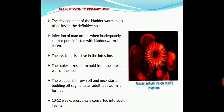The further development of the bladder worm or cysticercus takes place only inside the definitive host, that is man. Infection of man occurs when inadequately cooked pork infected with bladder worms is eaten. The cysticerci become active in the intestine, the scolex takes firm hold of the intestinal wall, the bladder is thrown off, and the neck starts budding segments. An adult tapeworm is formed, and in 10 to 12 weeks the proscolex is converted into adult Taenia solium.